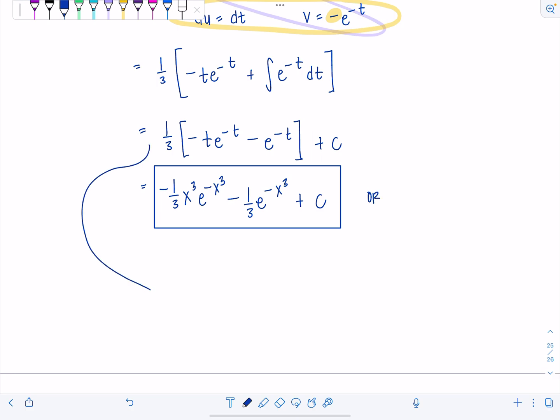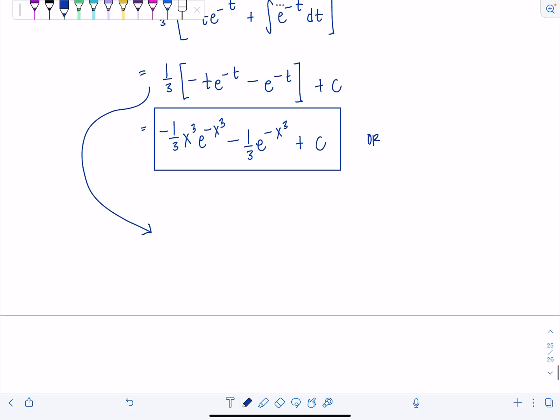Or you could say, you know what, I think it was wholly unnecessary to distribute that 1 3rd. Let's leave it more factored. So what you could do instead, actually, we could take out an e to the negative t, 1 3rd e to the negative t. Let's take out a minus sign with it. And then you're going to have t plus 1 left over.